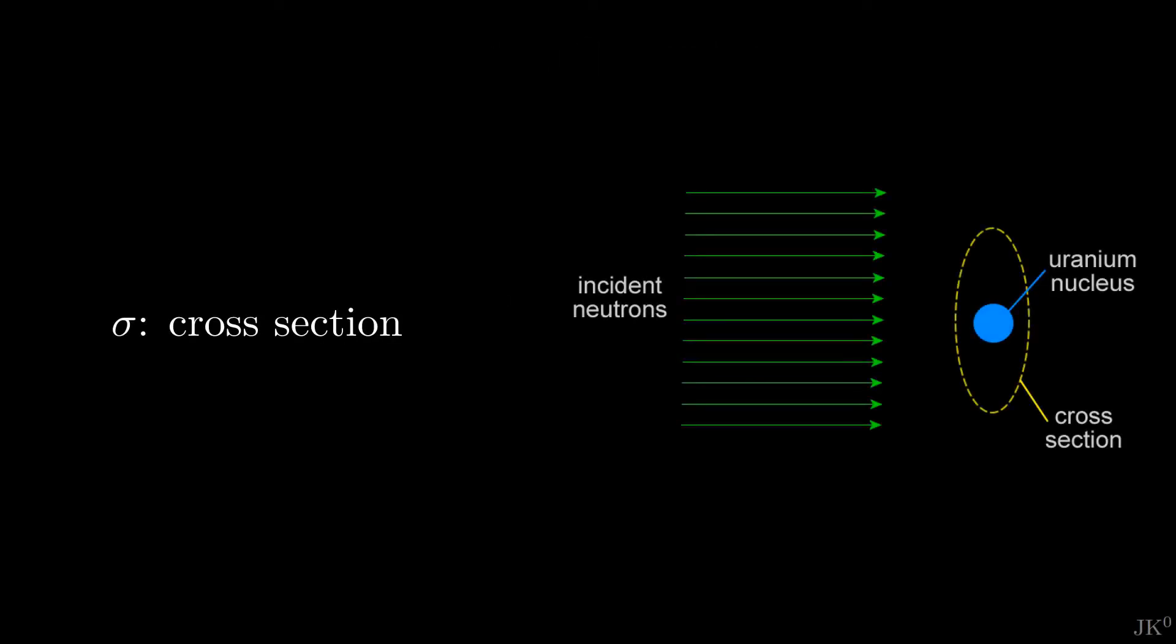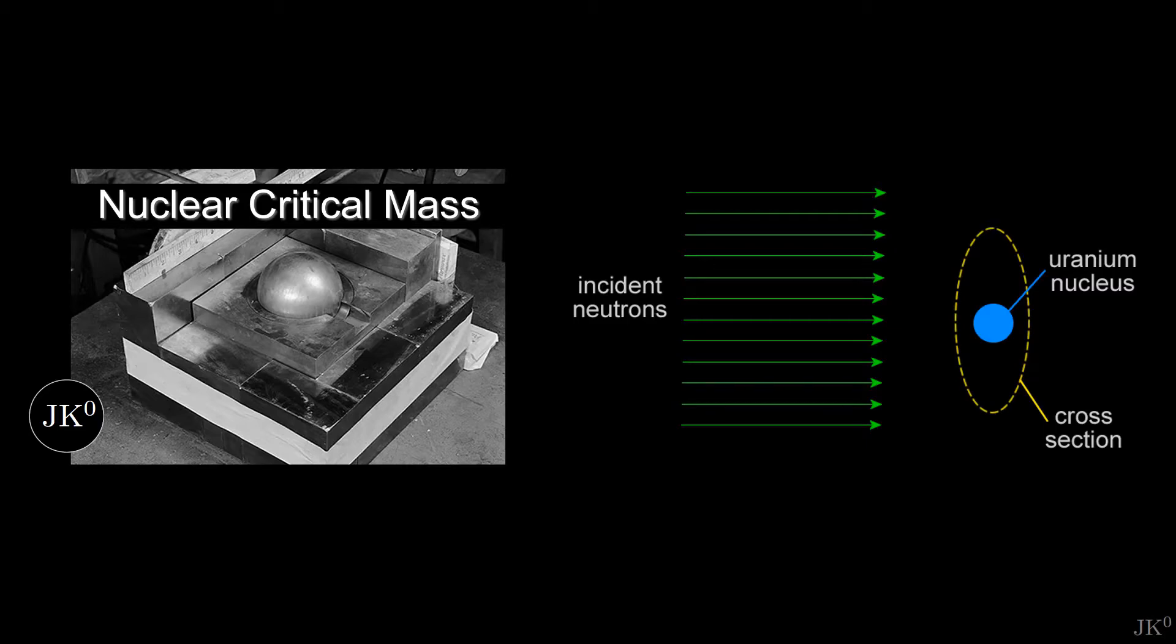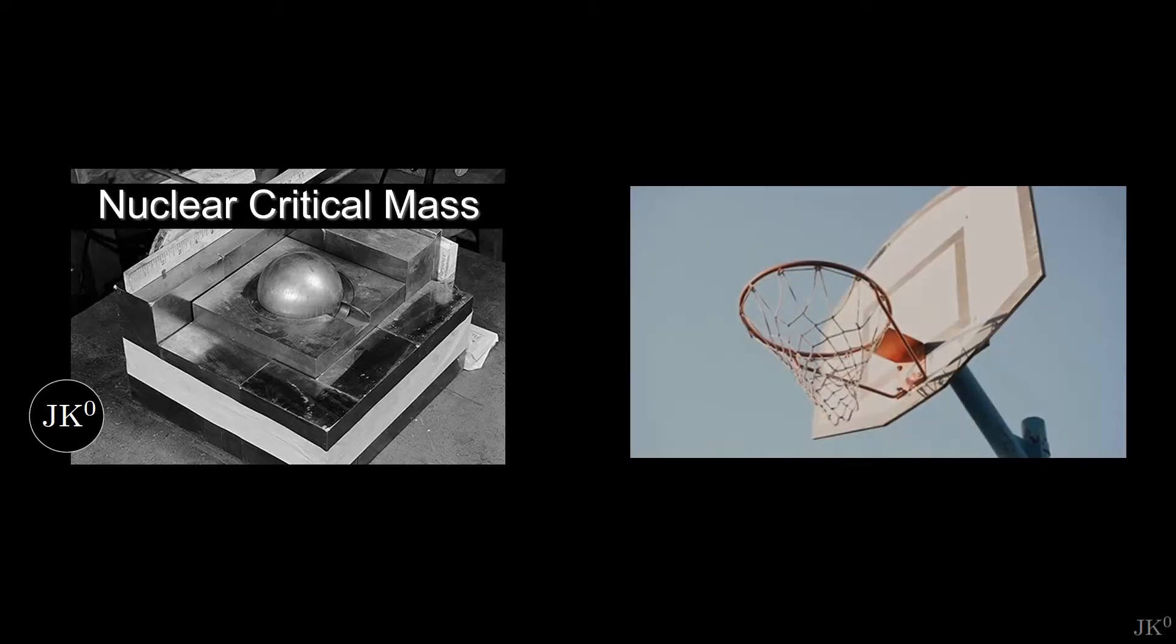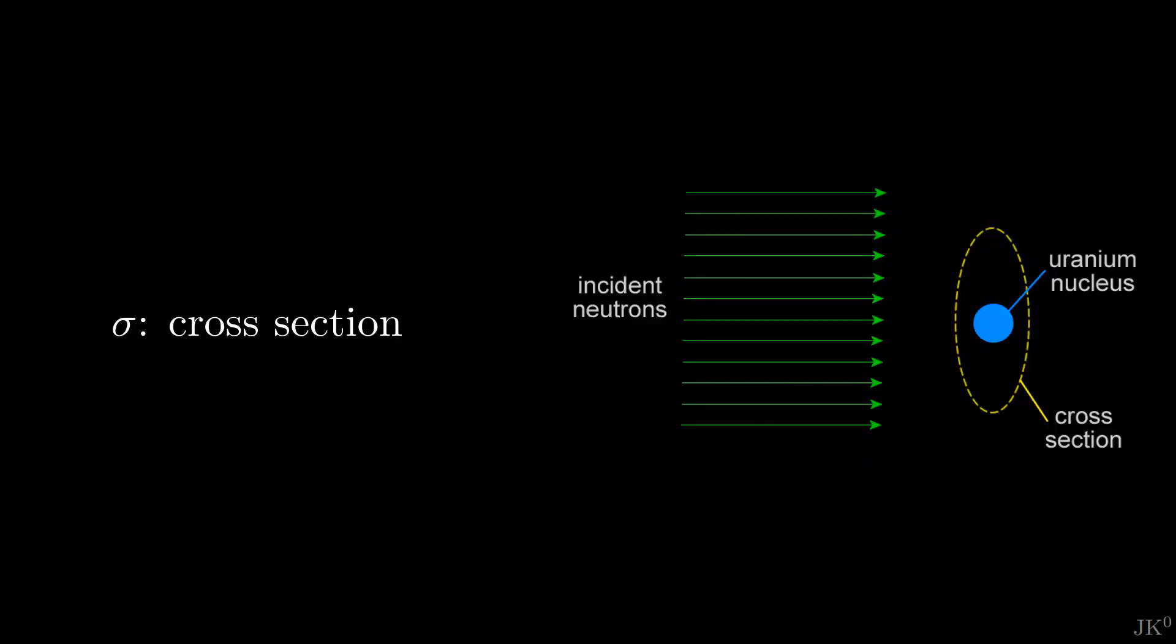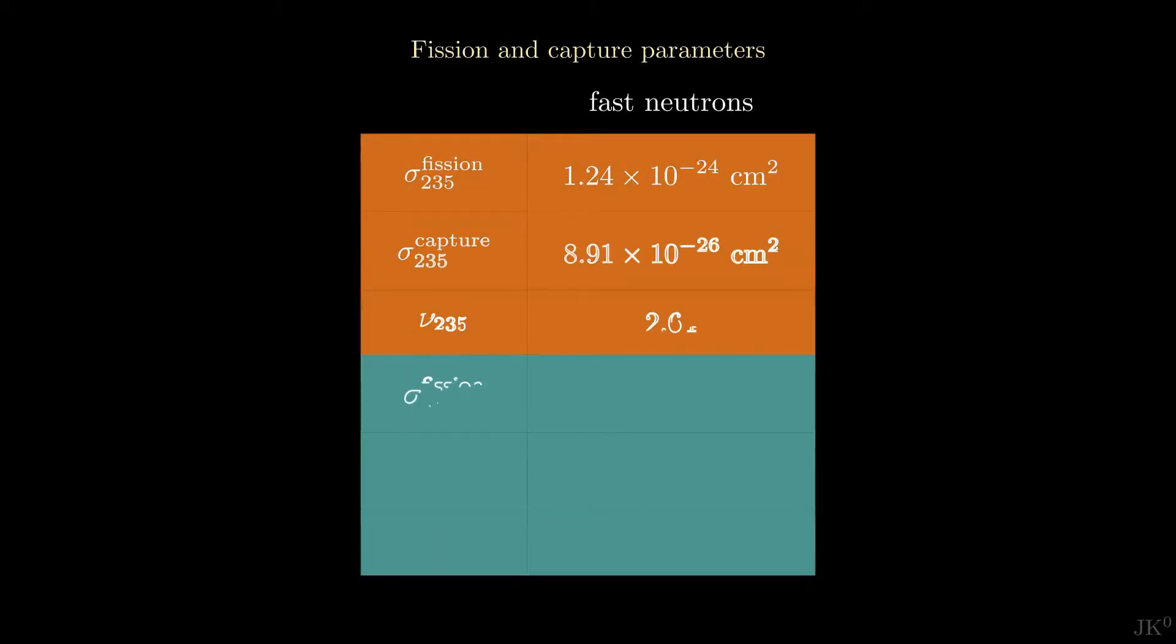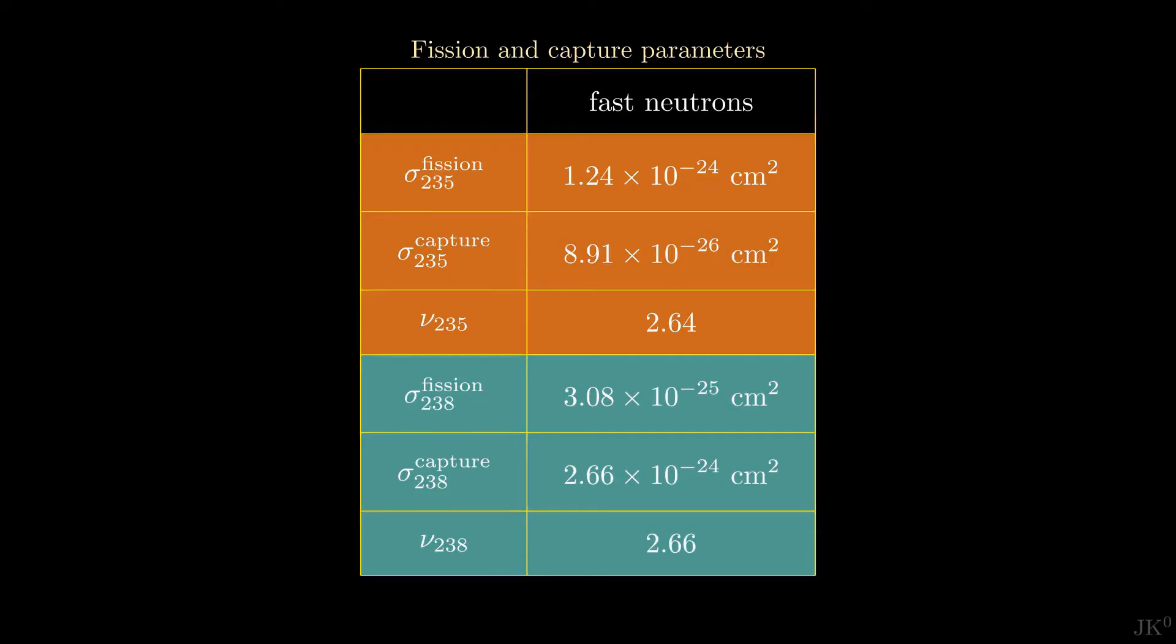Each reaction is characterized by its cross section, that was introduced in the video about critical mass. As a reminder, the cross section is a quantity that measures the probability that a given reaction can occur in terms of an area. There is a cross section for fission and another cross section for capture.